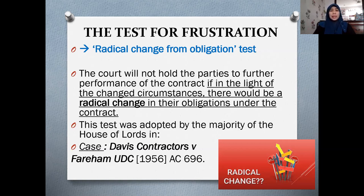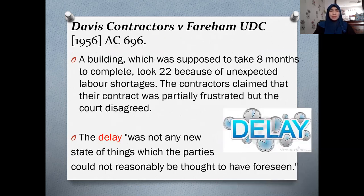This test was adopted by the majority of the House of Lords in Davis Contractors v Fareham UDC [1956]. In that case, a building which was supposed to take eight months to complete took 22 months because of unexpected labour shortages. The contractors claimed their contract was partially frustrated, but the court disagreed with that contention.